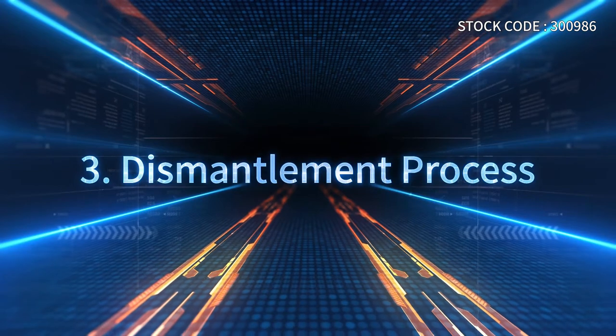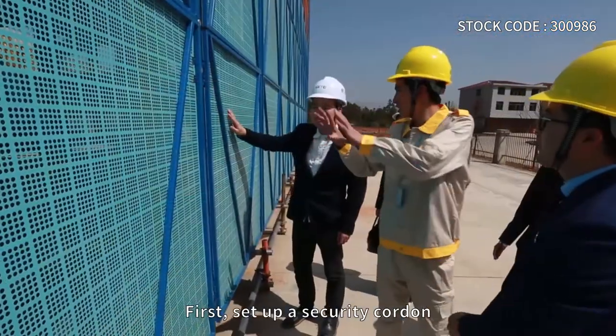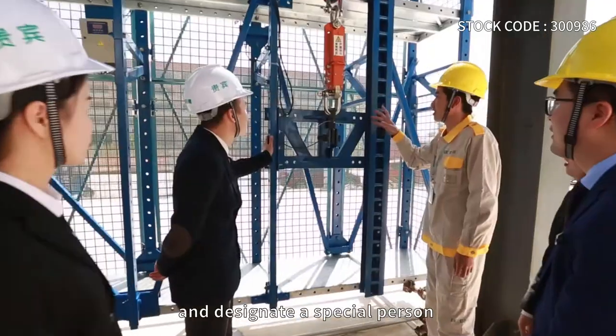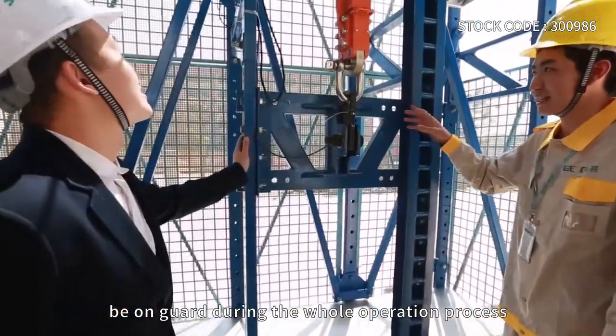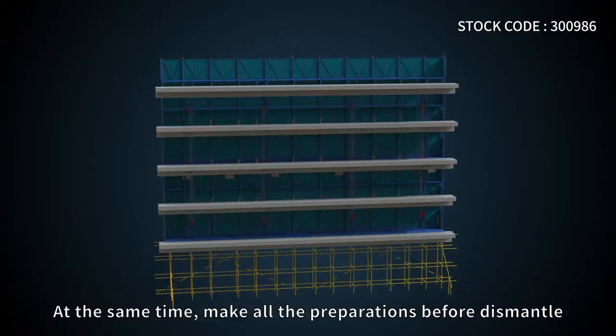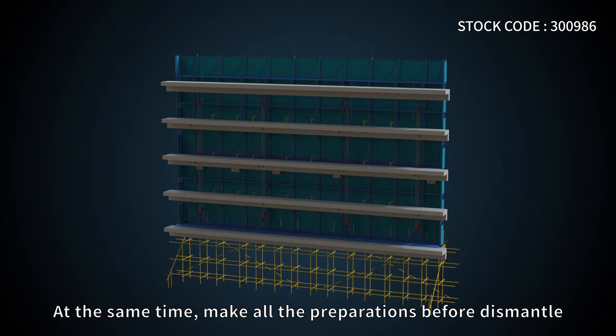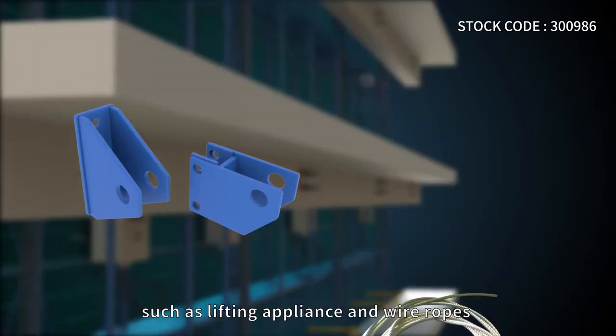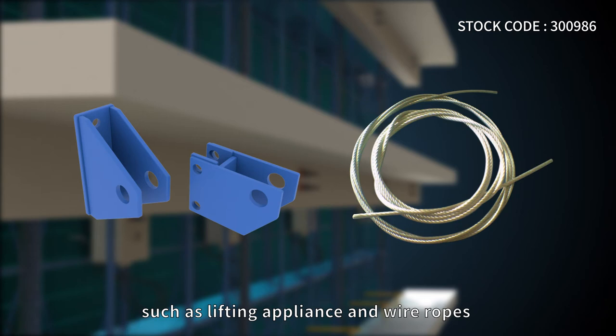Dismantlement process: First, set up a security cordon and designate a person to guard during the entire operation. At the same time, make all preparations before dismantling. Prepare special equipment such as lifting appliances and wire ropes.